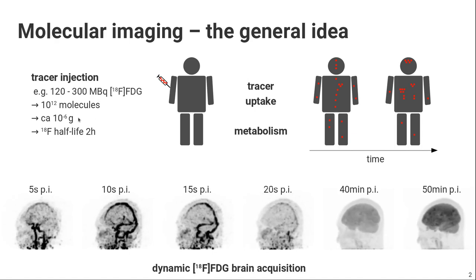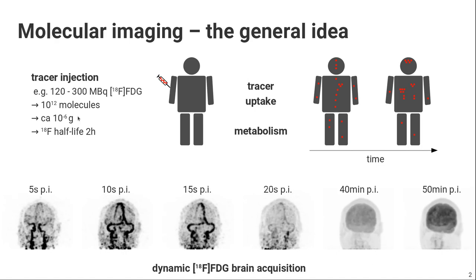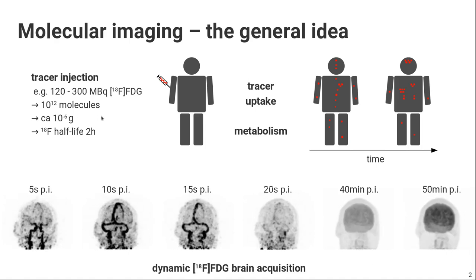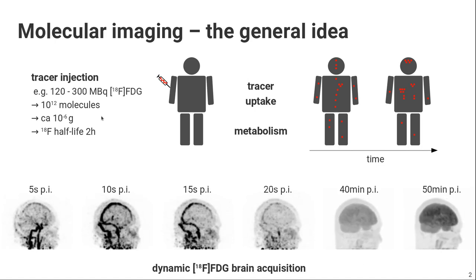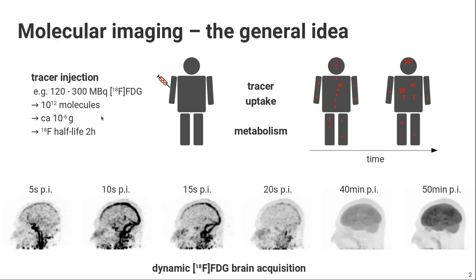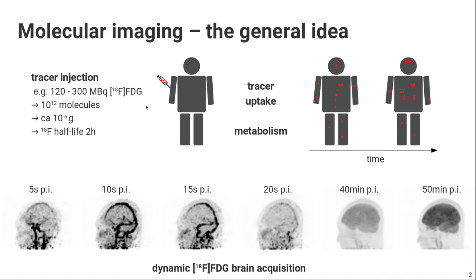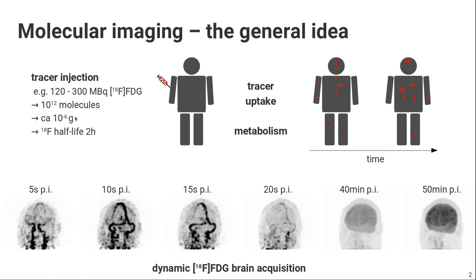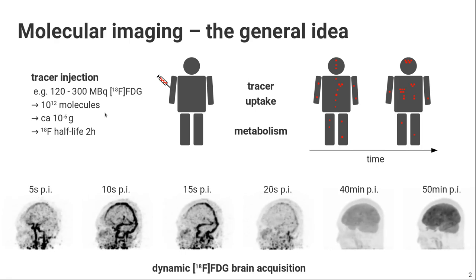It's also important because if you injected more — say a gram of glucose or several grams — the body would respond to the injection. For glucose, the body would start to produce insulin, which would change the glucose metabolism. So if you want to image the metabolism in its pure state, it's important to inject only a tiny amount of our tracer molecule. This is possible in nuclear medicine thanks to the high sensitivity of our imaging devices.